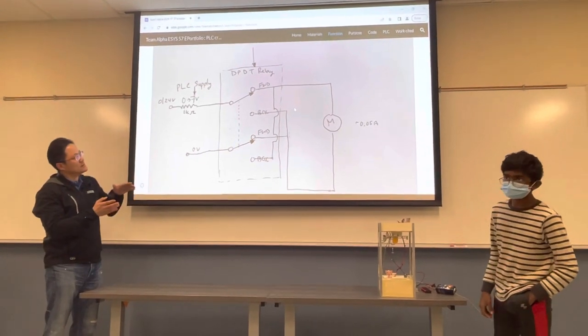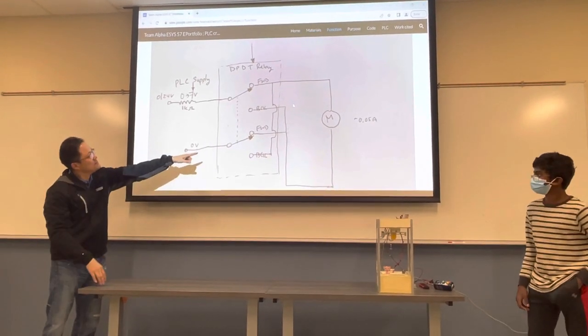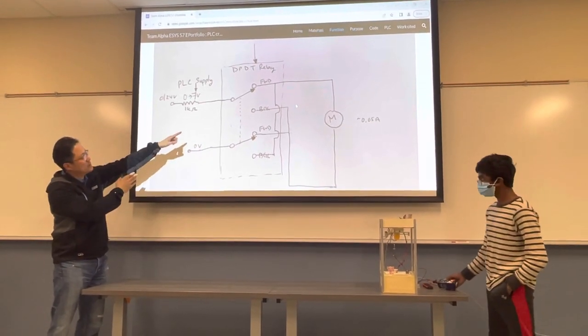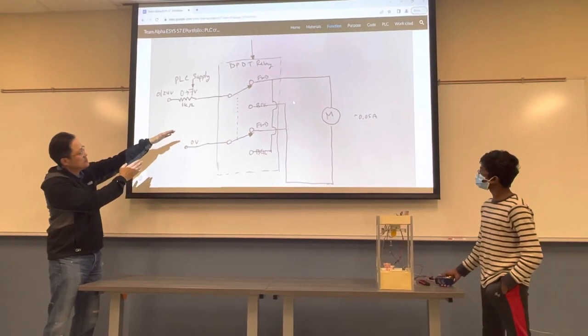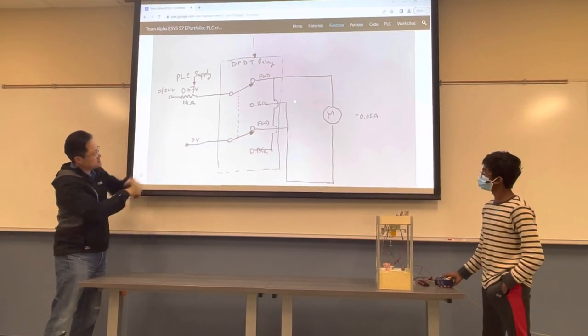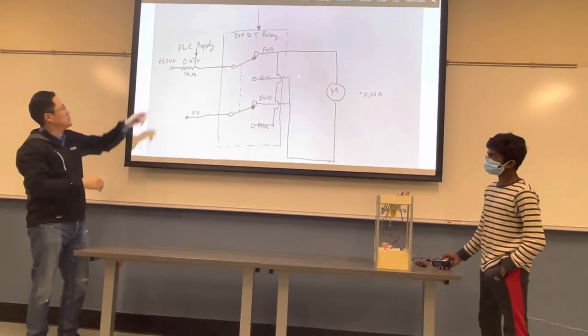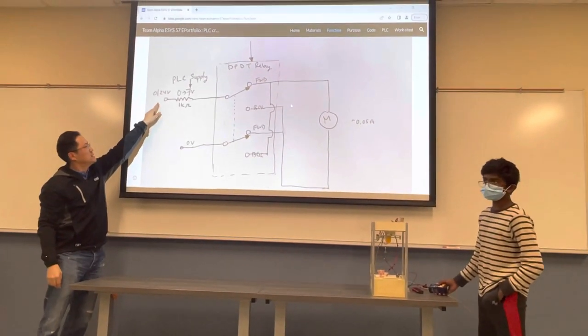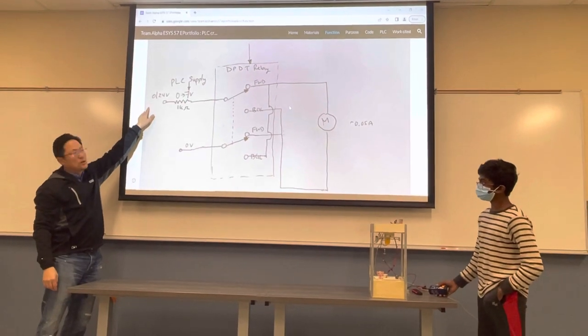What the relay does is it pretty much flips the polarity on the motor. So if you want to go down, then everything will be, or forward, let's say, everything will be on one pole. And then if you want to go backwards, then it flips the other side. But how do you drive the motor? That's going to be controlled by the power being supplied. So we have the PLC to turn it off or turn it on.